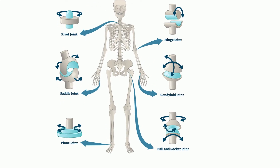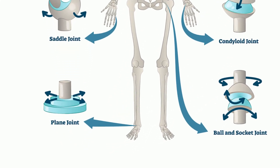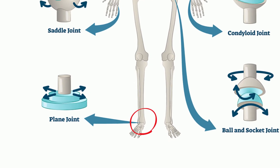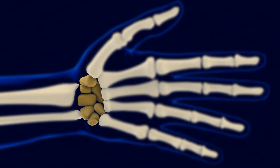Planar joints have bones that allow for gliding movements, so sometimes these joints are called gliding joints. The range of motion is limited in these joints and does not involve rotation. Planar joints are found in the carpal bones in the hand and the tarsal bones of the foot.